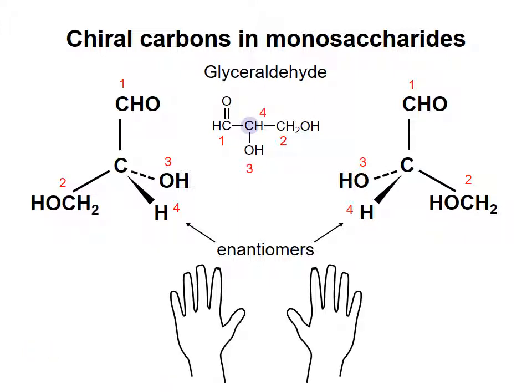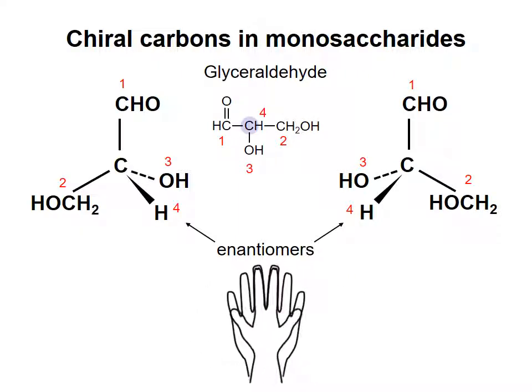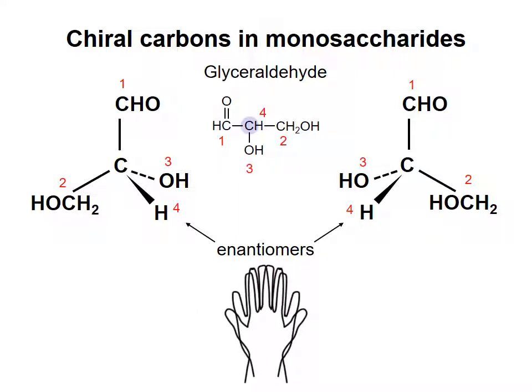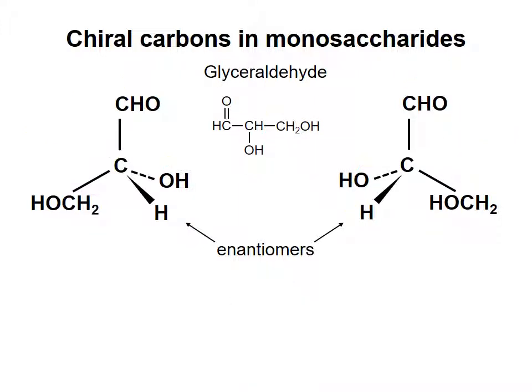As an analogy, consider a left and right hand. They have the same essential structure but cannot be oriented in exactly the same way because they are mirror images of each other. Carbon atoms with four different chemical groups attached to them are called chiral carbons. Note that the other two carbons in glyceraldehyde are not chiral because they do not have four different chemical groups bonded to them.